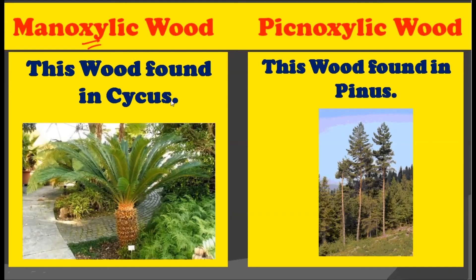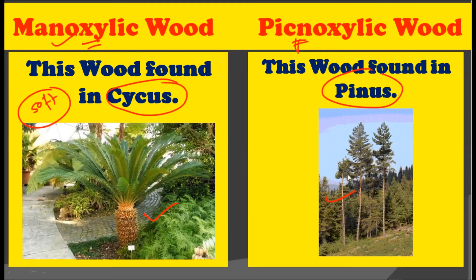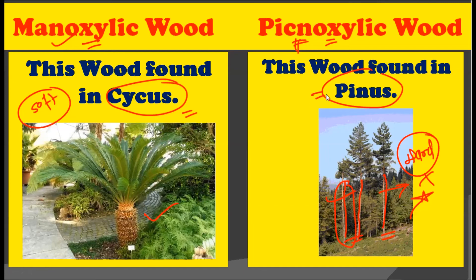The example for Manoxylic wood is Cycas, while the example for Pachyxylic wood is Pinus. You can see in the picture — Cycas is a very short plant without branching, which has the Manoxylic type of wood, that is, a very soft wood. On the other hand, you can see the large trees of Pinus growing straight up, and these are made up of Pachyxylic wood, which is very hard wood.